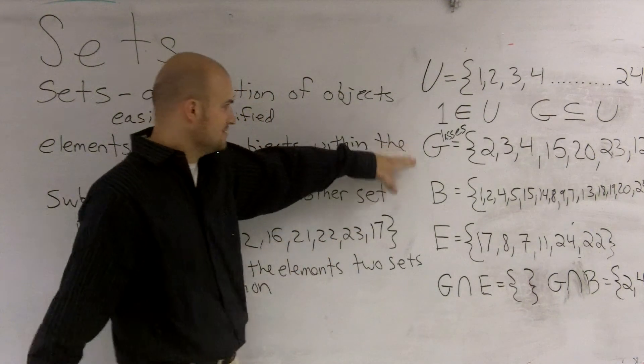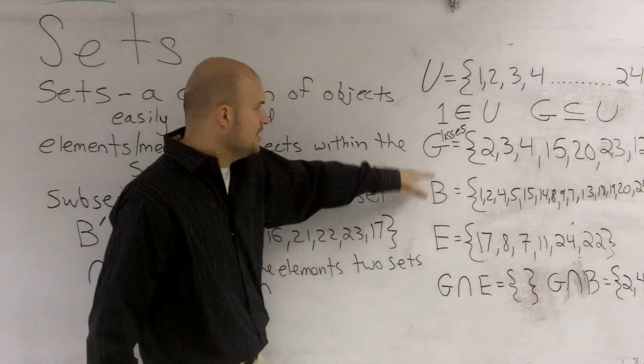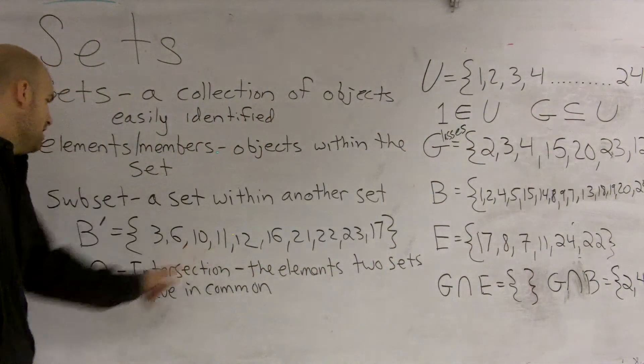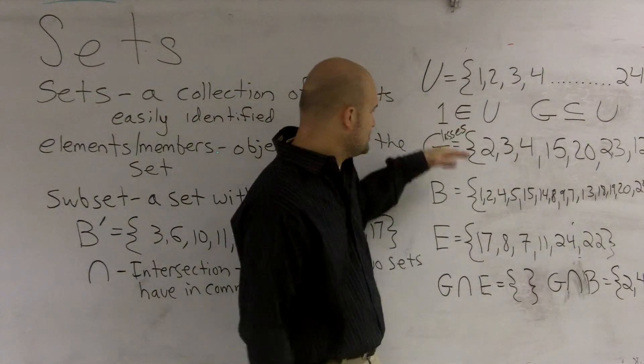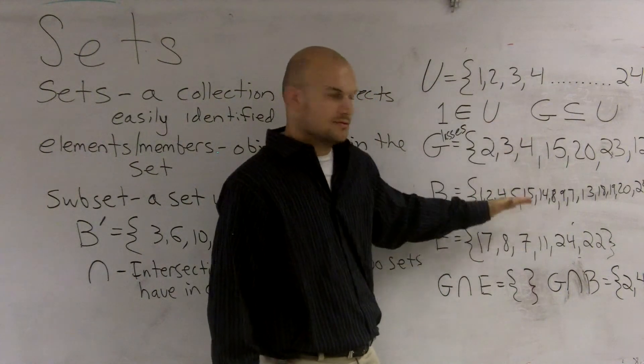You have two subsets. You have your subset, G and B. Your intersection is the elements the two sets have in common. So, I looked and I said, all right, what are the numbers that G and B both have in common?